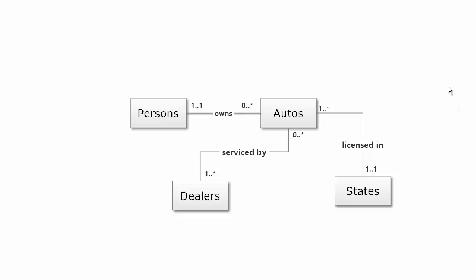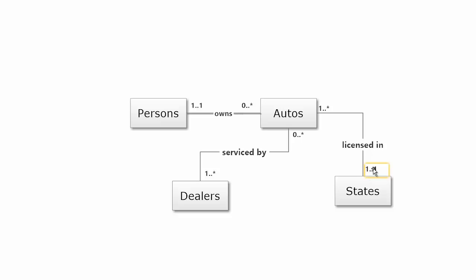We have the four options for multiplicities. Let's go back and complete our example. We had persons associated with automobiles. Now we have the association between automobiles and dealers. For each automobile, they could be serviced at a minimum of 1 and maximum of many dealers. Each dealer could service a minimum of 0, maximum of many automobiles. Each automobile is licensed in a minimum of 1 and maximum of 1 state. And each state licenses a minimum of 1 and maximum of many automobiles.